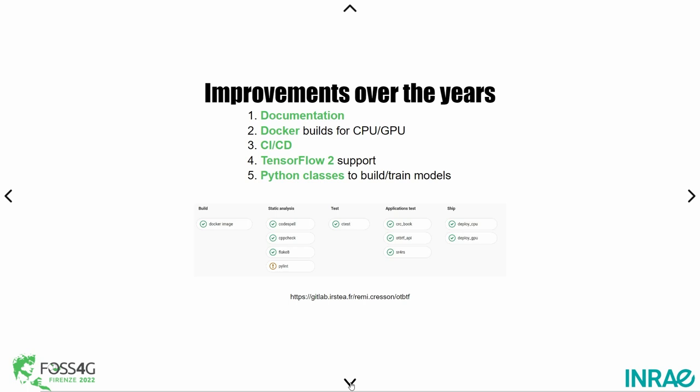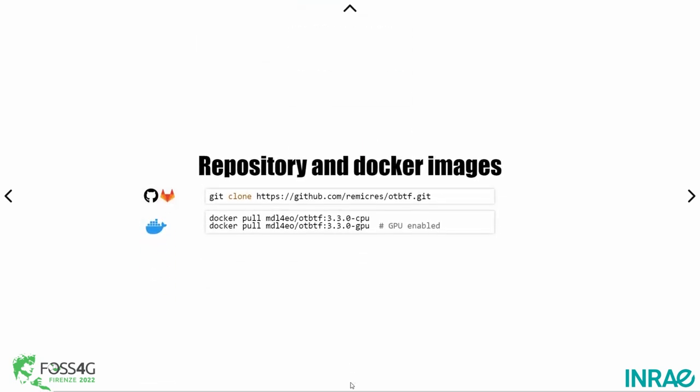Very recently, like two months ago, we released the latest version with some Python classes, and we can now talk about a Python API. It's a set of classes that help deep learning practitioners do their work. You can clone the code on GitHub and pull the Docker images from Docker Hub.